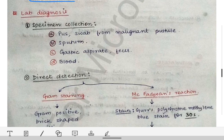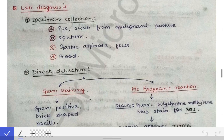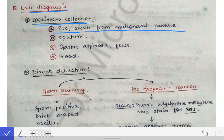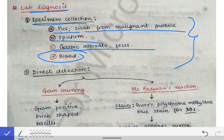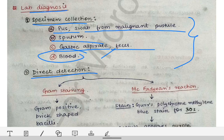For lab diagnosis, specimen collection is based on the type of manifestation. For cutaneous anthrax, collect a pus swab from the malignant pustule. For pulmonary anthrax, collect sputum. For intestinal anthrax, collect gastric aspirate, feces, or vomitus. Blood should also be collected in all cases to detect septicemia, which commonly occurs in late stages of anthrax.